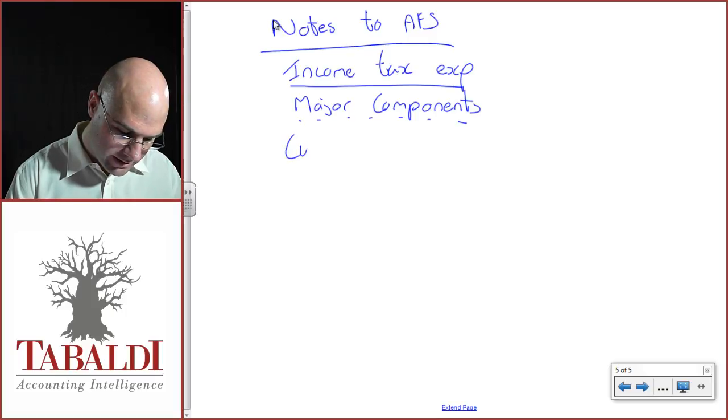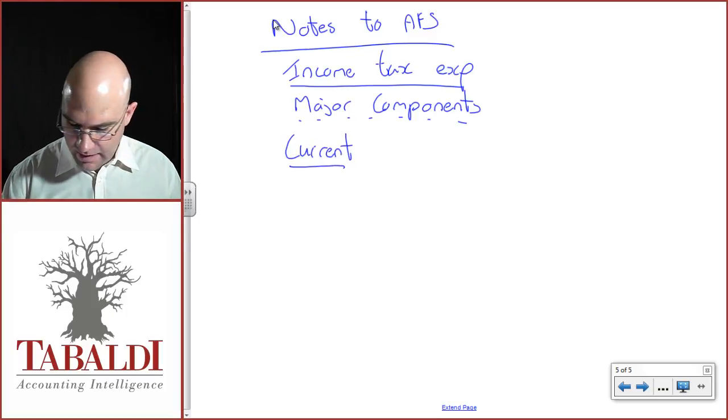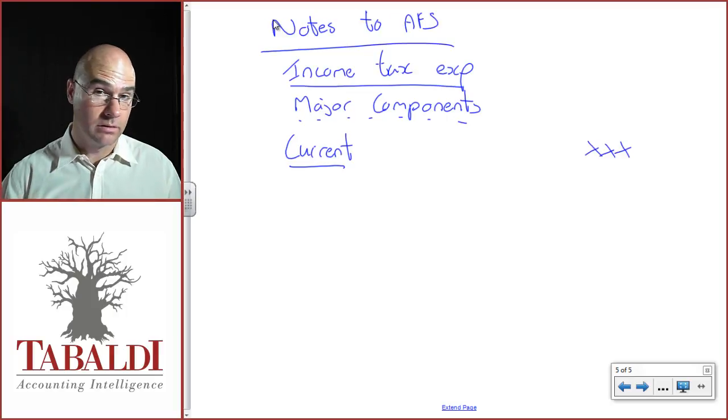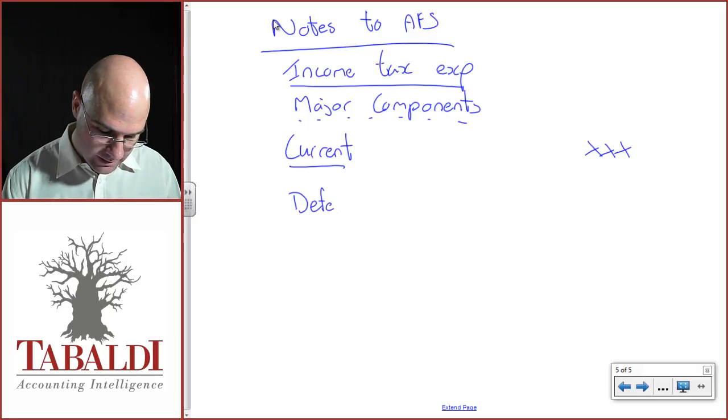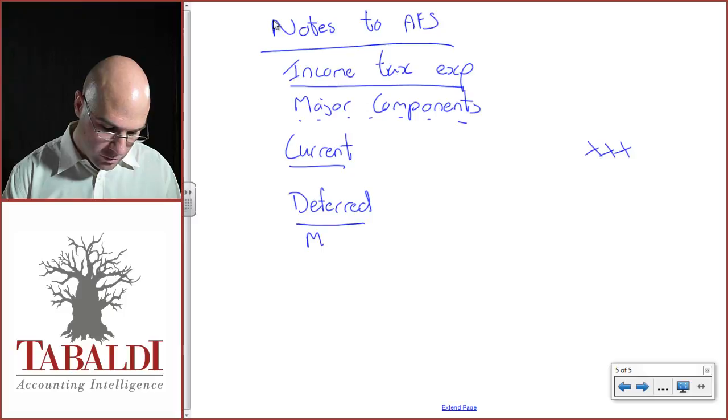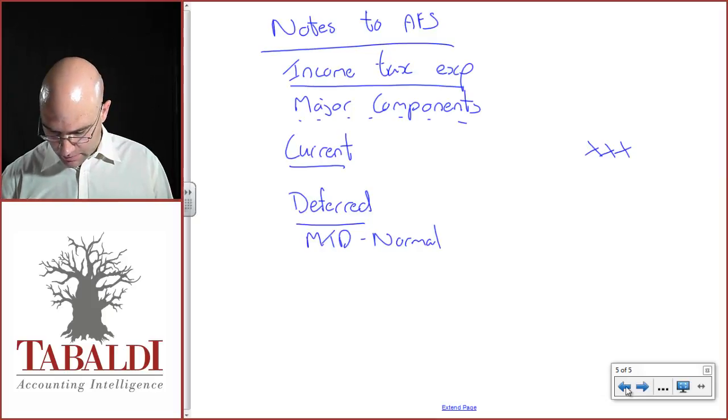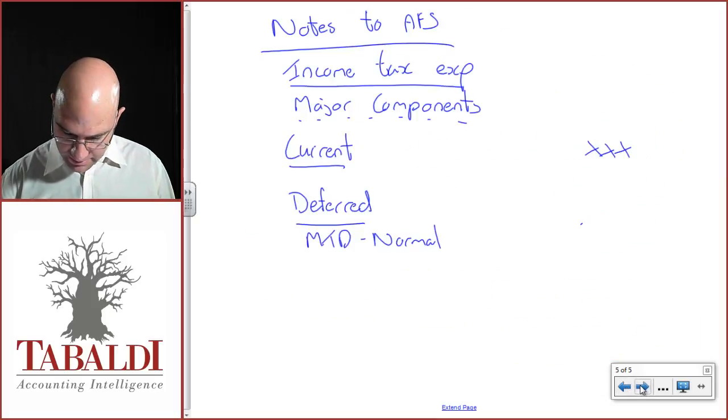And what are those major components? Those are current tax expense. And current tax expense in this scenario was, well, we don't know, we're going to put XXs. And then deferred tax expense. Well, that is going to be my movements in temporary differences normal, which we've just journalized as 2,800.